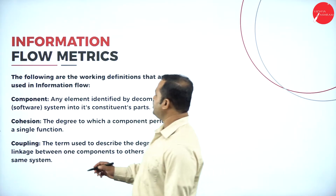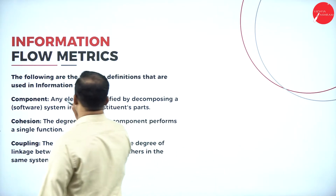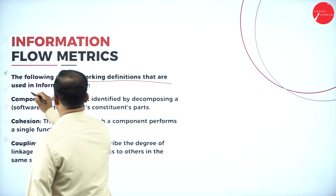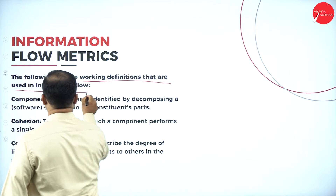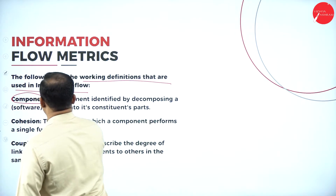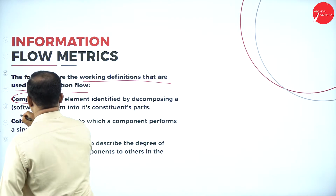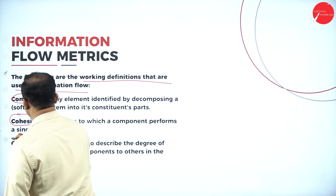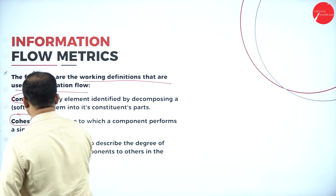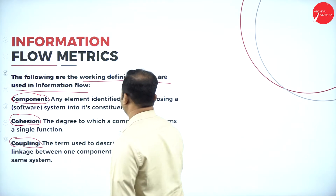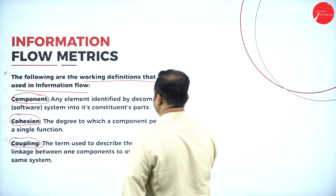These kinds of information flows are identified when modules are integrated together. That is the meaning of this paragraph. The information flow matrix consists of the following definitions: the first one is component, the second one is cohesion, and the third one is coupling.